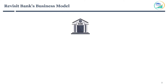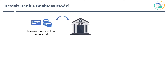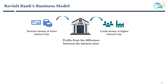Let's summarize the business model again. A bank borrows money at a lower interest rate from various sources. In turn, it lends money at a higher interest rate to individual people or companies in various forms as loans. The bank profits from the difference between the interest rates. This is also called interest income and is the primary source of income for banks.